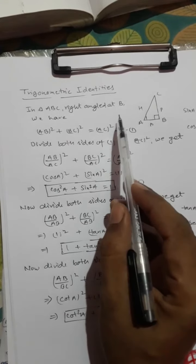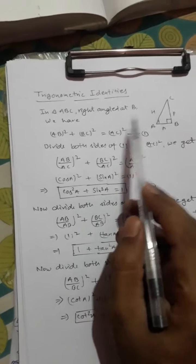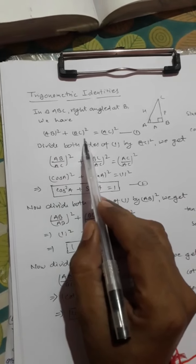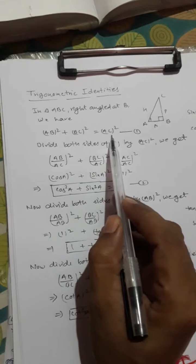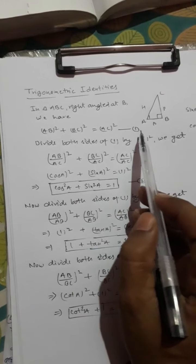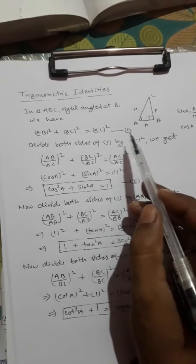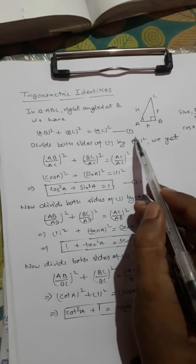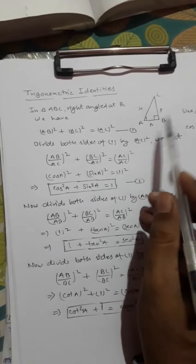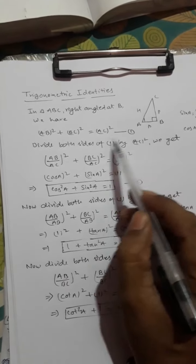In triangle ABC, right angle at B, we have by the Pythagorean theorem: AB² + BC² = AC². Let this be equation one. For each identity, we will start from this same setup and apply the Pythagorean theorem to the right angle triangle.